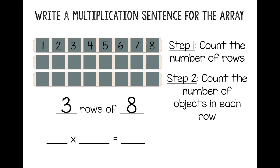So I have 3 rows of 8. And to write it as a multiplication sentence, my first factor should be the number of rows, 3, multiplied by the number in each row, 8. And then I need to find my product. So I count up all of the squares in the array, or I can use repeated addition, 8 plus 8 plus 8. And I get a product of 24.